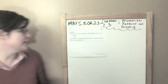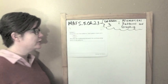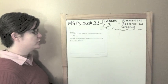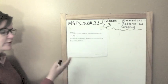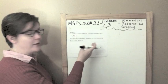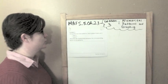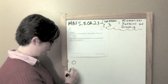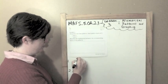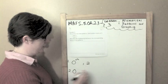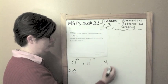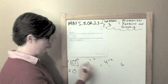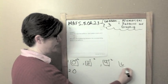Example 3. Alexandria has 2 patterns. Each pattern starts at 0. The first pattern is to add 2, and the second pattern is to add 4. Describe the relationship between the corresponding terms. So let's first figure out what the patterns are, because this is an open response question. Pattern 1 starts at 0, add 2: so 2, 4, 6. Pattern 2 starts at 0, add 4: so 4, 8, 12.